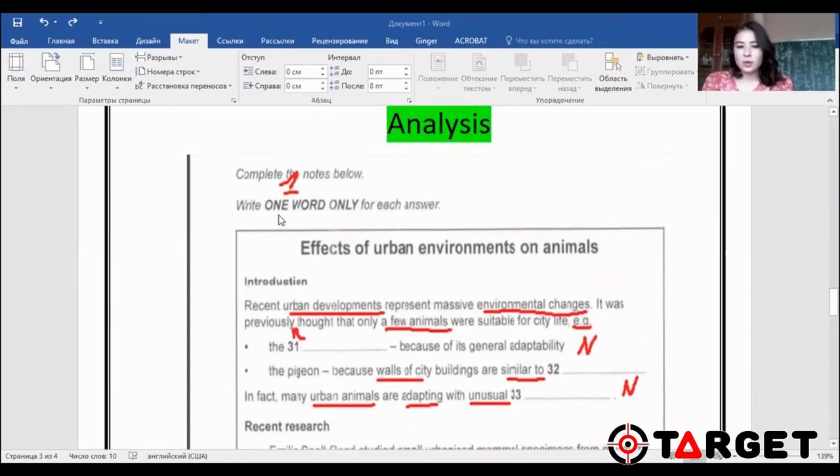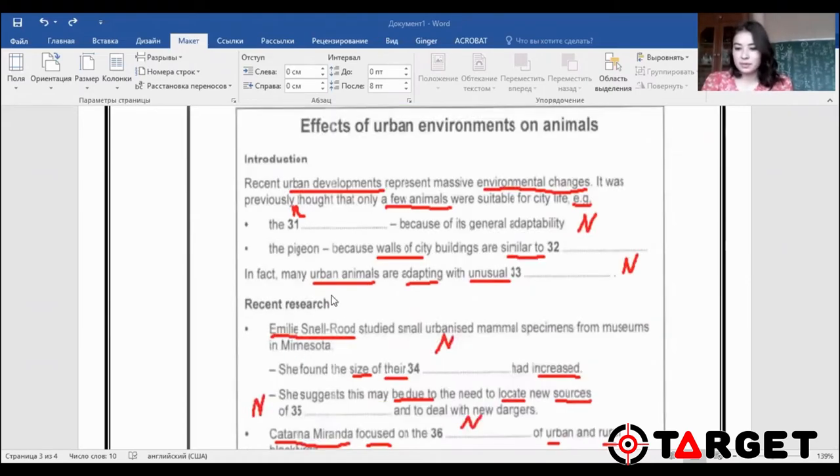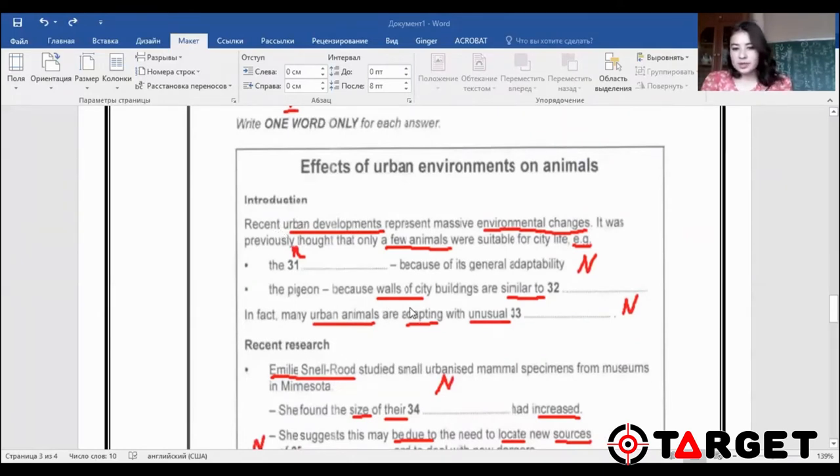The instruction: write one word only for each answer. As you can see, as usual, I put the number not to get distracted. And intro. All the words that I have underlined, they are keywords, the important ones. Let's start reading. Recent urban developments represent massive environmental changes. It was previously thought that only a few animals were suitable for city life. Example. So here in questions 31 and 32, there will be examples. Next, number one, the something is going to be a noun because of its general adaptability. By the way, I have forgotten to underline general adaptability because this is also a keyword. It may be paraphrased.